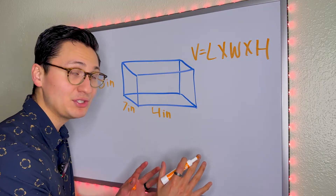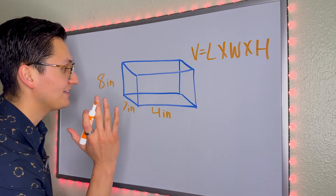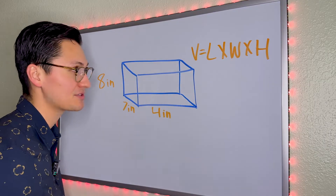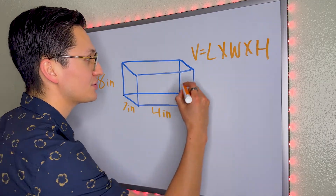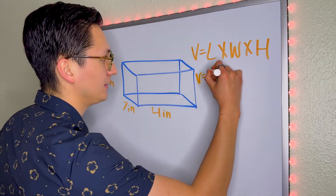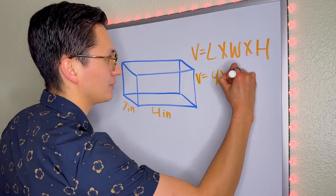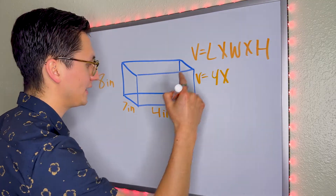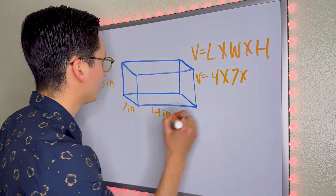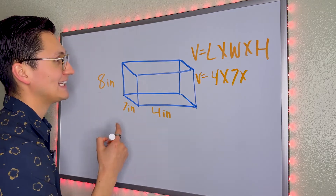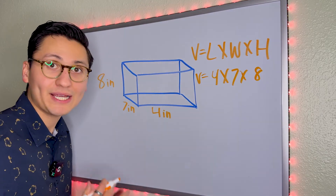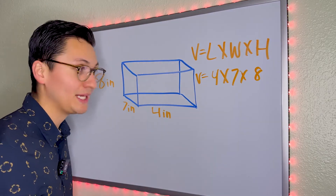What we have to do is look at our sides and plug in the numbers. So what is the length? It is 4. What is the width? It is 7. And what is the height? It is 8. Now all we have to do is multiply.